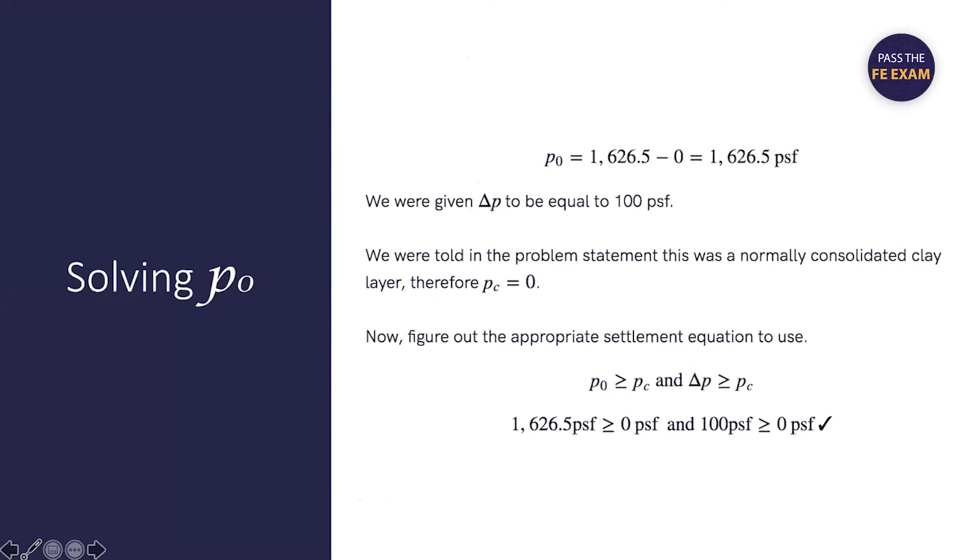We were given delta p to be equal to 100 PSF. We were told in the problem statement that this was a normally consolidated clay layer. Therefore, pc equals zero. Now, figure out the appropriate settlement equation to use.